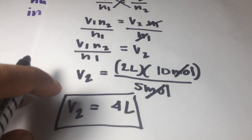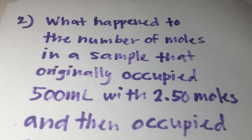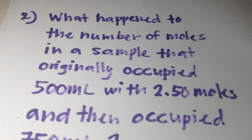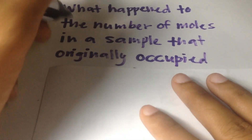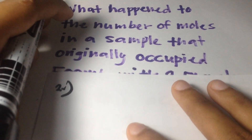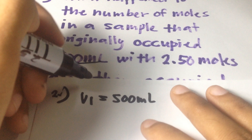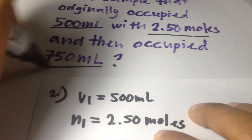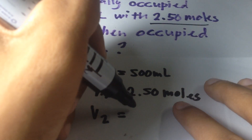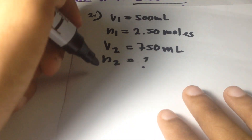How about problem number 2? What happened to the number of moles in a sample that originally occupied 500 ml with 2.5 moles and then occupied 750 ml? So, V1 equals 500 ml, N1 equals 2.5 moles, V2 equals 750 ml, and N2 is the unknown we need to find.